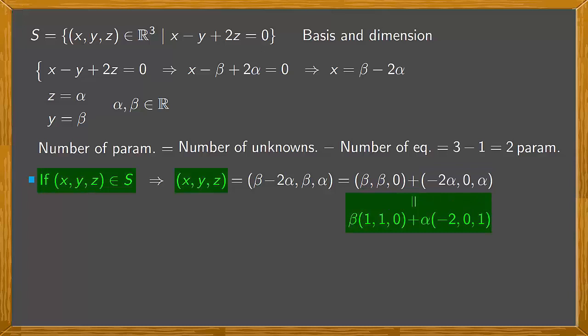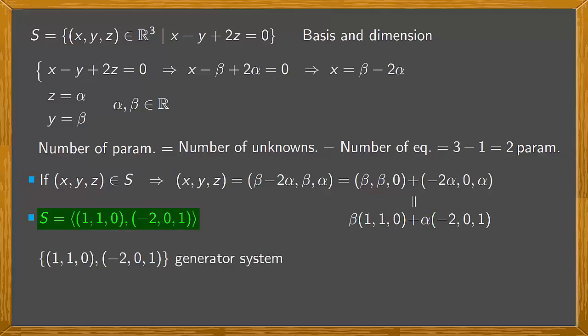We've just obtained that every vector of S is a linear combination of these vectors, so that S is generated by (1, 1, 0) and (-2, 0, 1). So, a generating system of S is the set {(1, 1, 0), (-2, 0, 1)}.